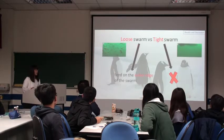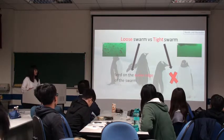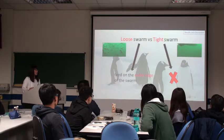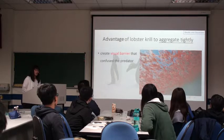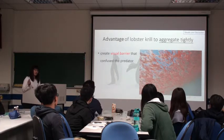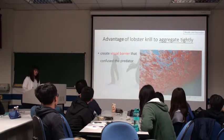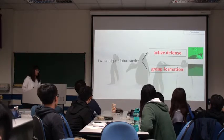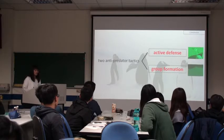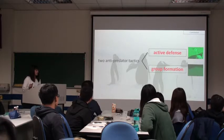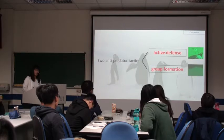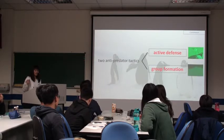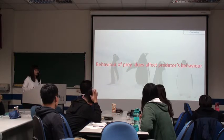Through the video we collected, we found out that the penguin feeds on the outer edge of the loose swarm, but not on the tight swarm. The advantage of krill aggregating together is that they can create a visual barrier that will confuse the predator, so that the predator cannot single one out of the whole group. From the discussion above, we know there are two anti-predator tactics: one is active defense using pincers, and one is swarm formation. These two tactics definitely change the behaviour of predators, so that predators must react correspondingly. So we know the behaviour of prey does affect predator behaviour.